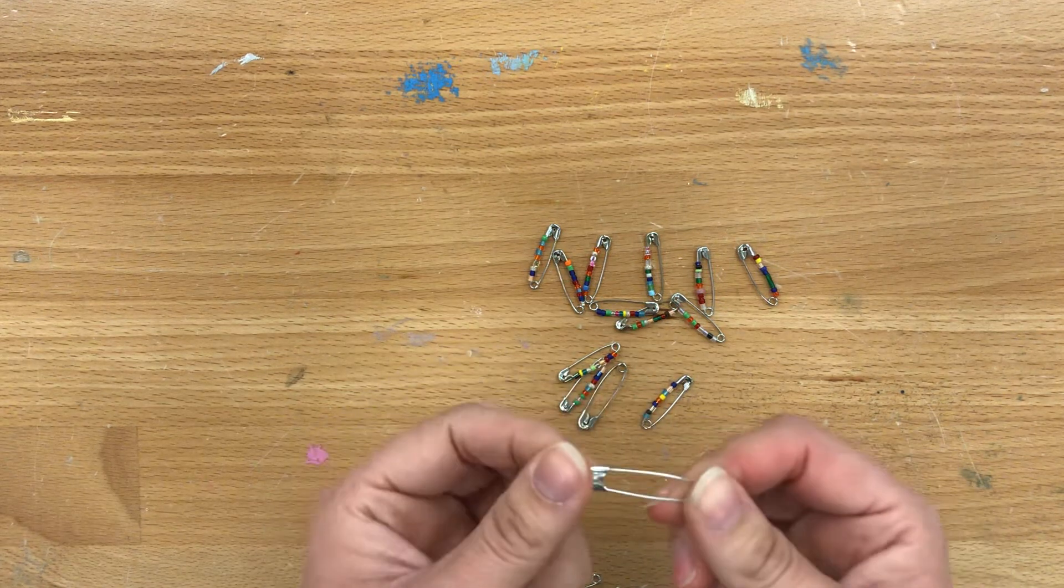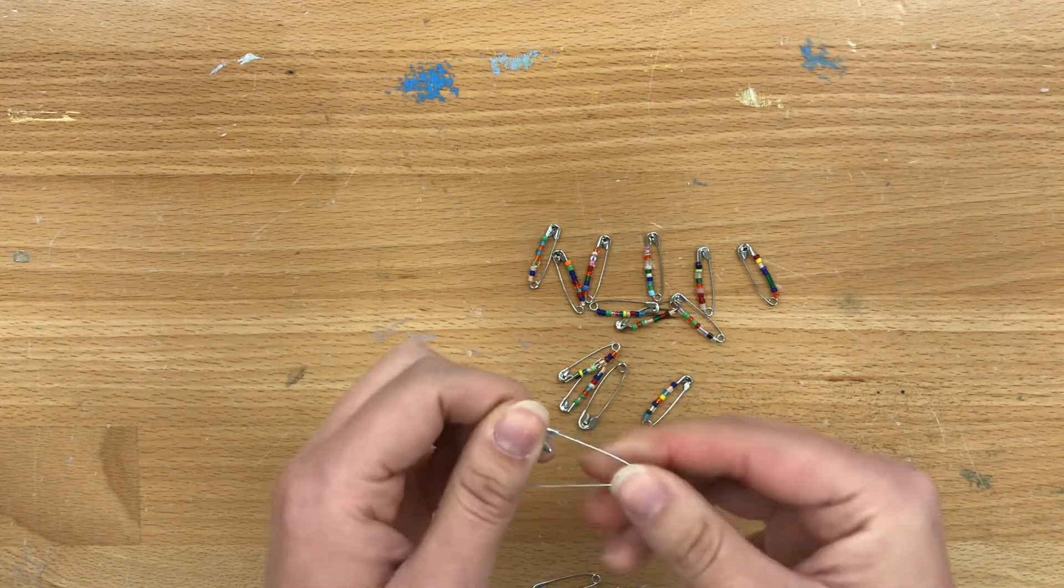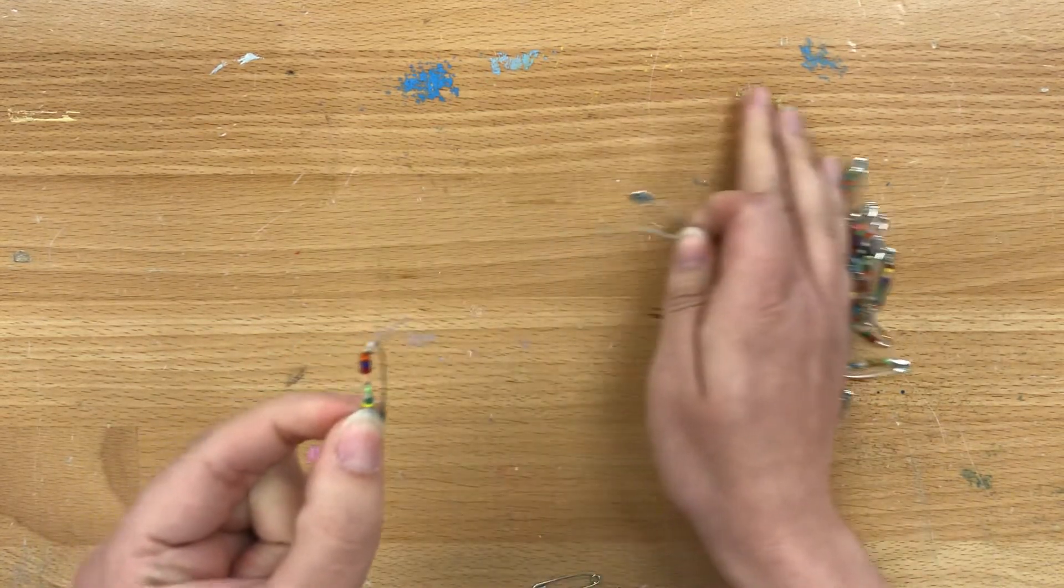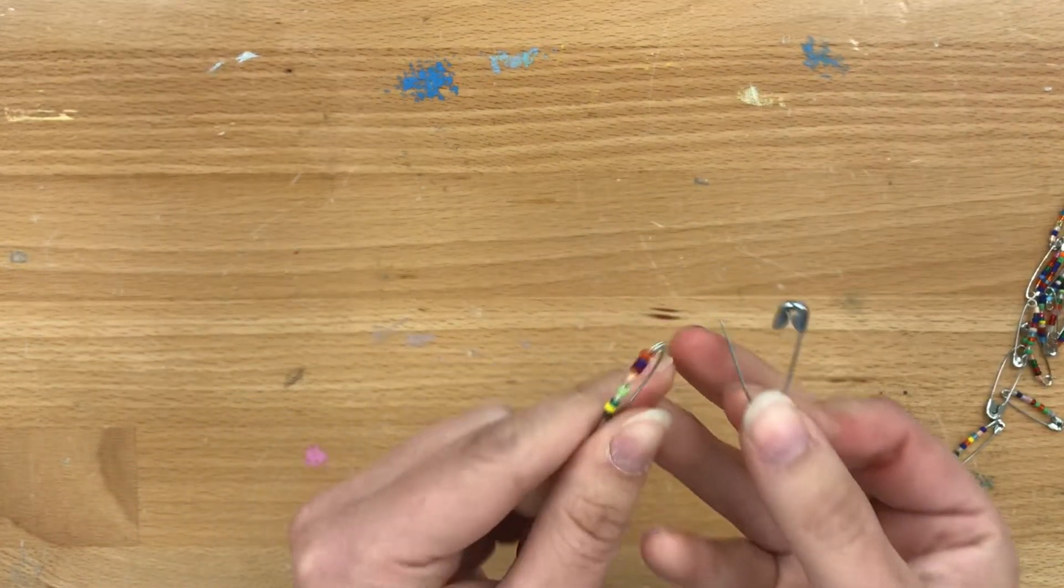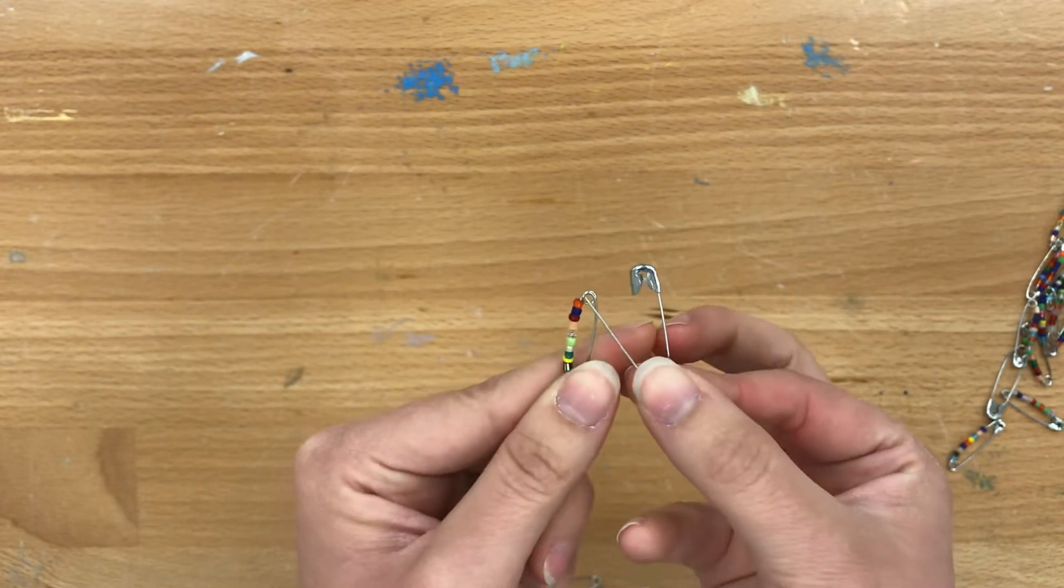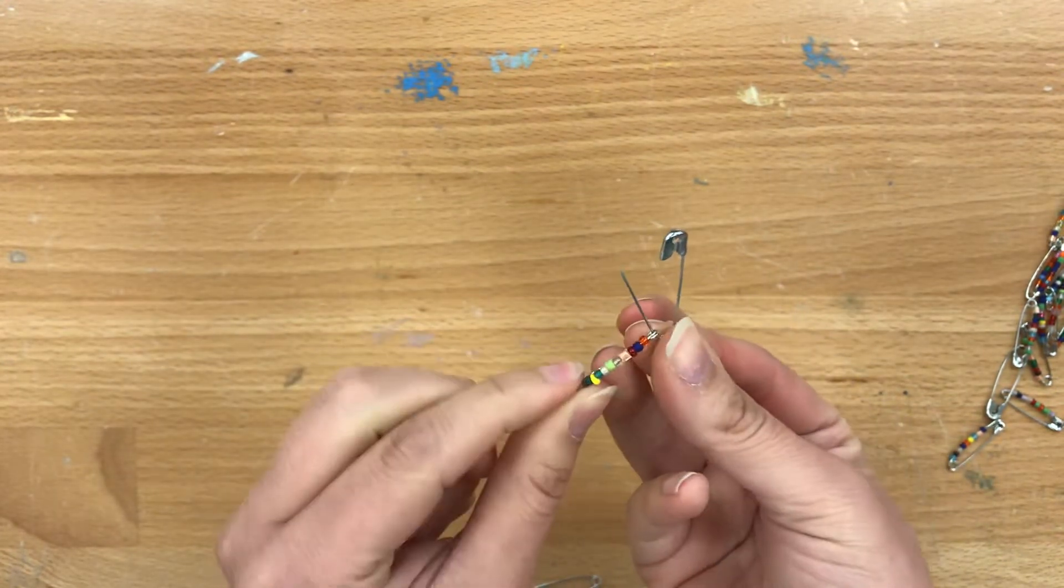So now we're going to come back to our large safety pin and open it up and then taking one at a time one of our small pins we're just going to feed the sharp end of this large safety pin through this small hole on the small safety pin.